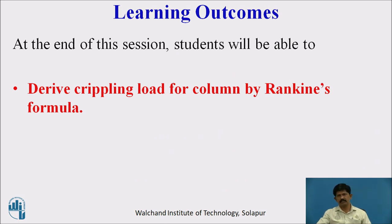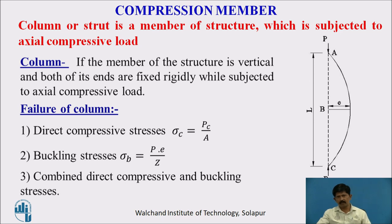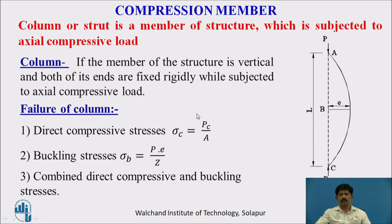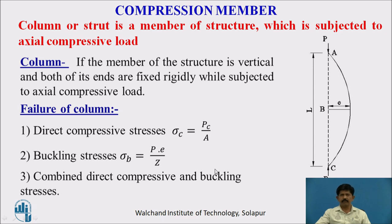The learning outcome of today's lecture is that the student will be able to derive the crippling load of a column using Rankine's formula. A compression member may be a strut or a column subjected to axial compressive load. A column is a structural member which is vertical and both its ends are fixed while subjected to axial compressive load. Failure of columns may be due to direct compressive stress if the column is short — that is, when the ratio of length to least lateral dimension is less than 12. A long column fails by buckling stress, where the ratio of length to least lateral dimension is greater than 12. A column in between long and short may fail by the combined effect of direct compressive stress and buckling.